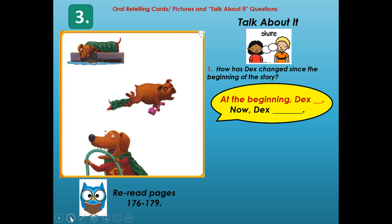At the beginning of the story, Dex was out of shape — he didn't exercise. He was plump like a stuffed sausage and could barely walk around. But now, Dex has muscles. He is strong, he has lots of energy, and he's helping people — getting wallets, tracking down bad guys, and helping people with things that are broken.